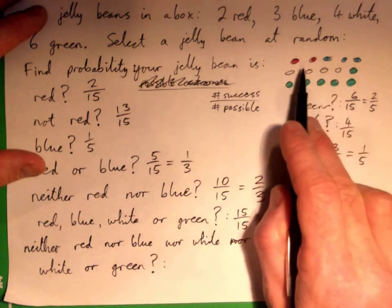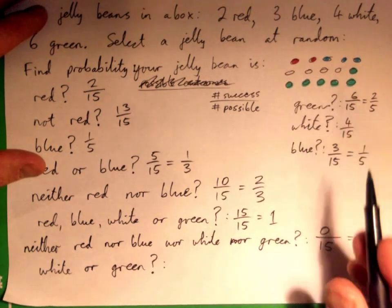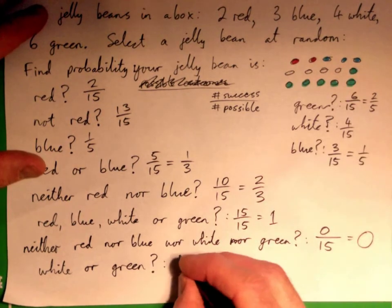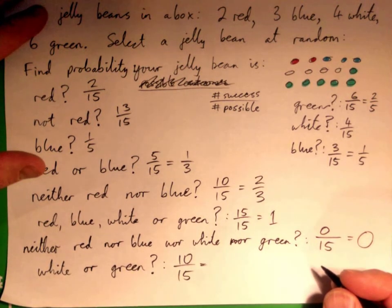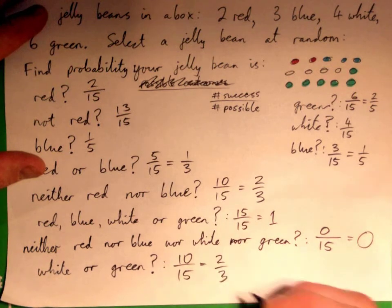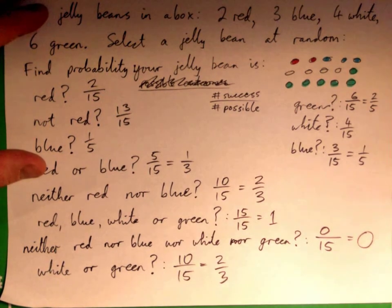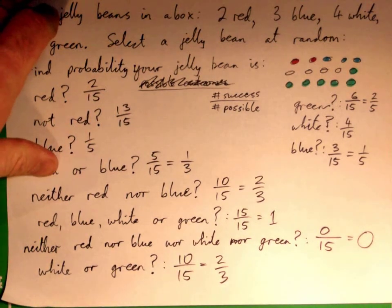Good. It could be any of these four white, and these six green. So, that's four and six is ten. Good. Ten out of fifteen. Simplify that. Two thirds. Perfect. Good to go.